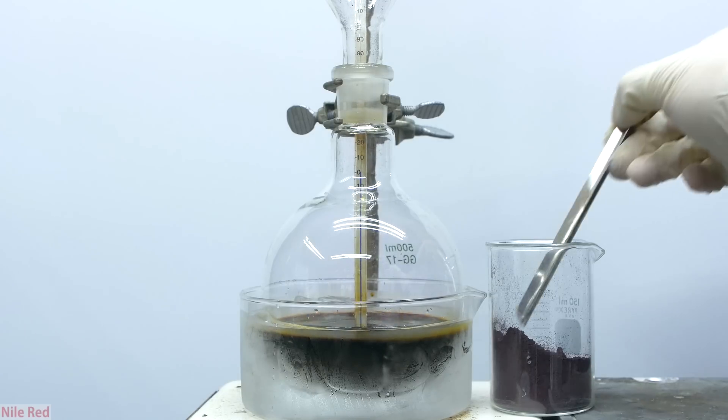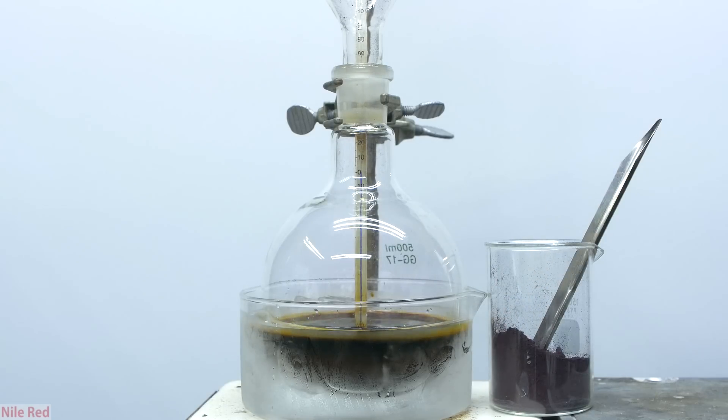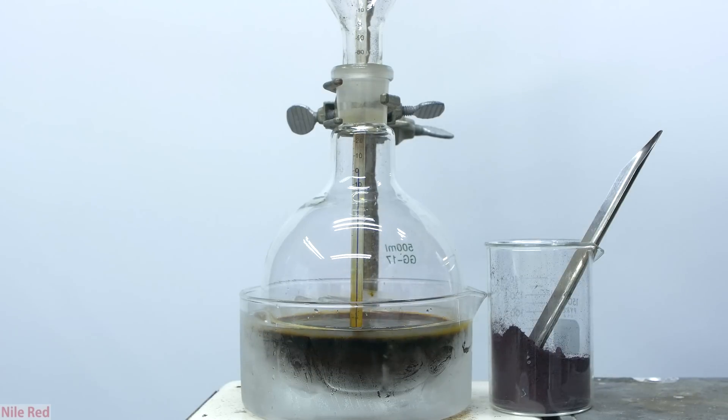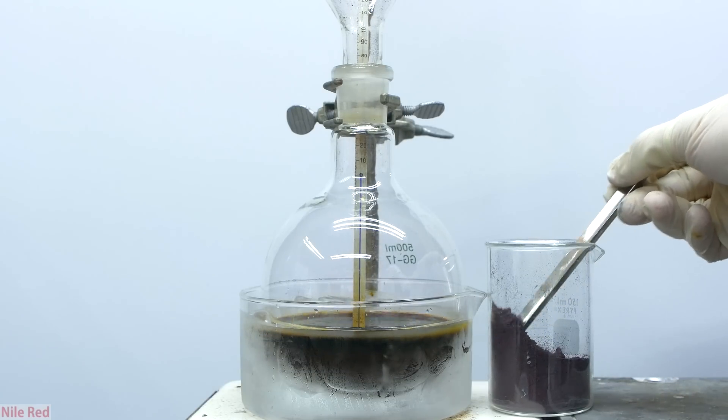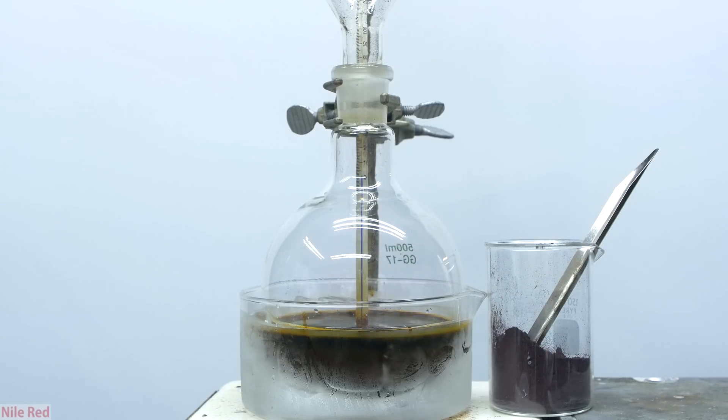The addition of the red phosphorus will initiate the reaction and the production of the methyl iodide, and this reaction is exothermic, which means it releases heat. Methyl iodide has a boiling point of around 42°C, so if we add the red phosphorus too quickly or don't cool it adequately, the temperature could go above 40°C and we can start boiling off the methyl iodide.